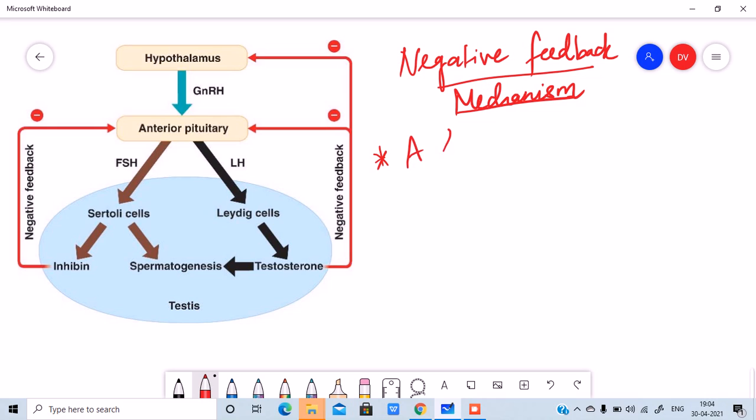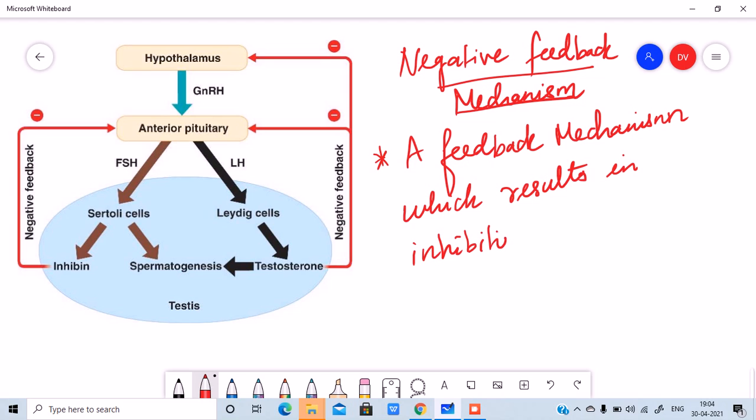What is it? I'm just giving you a definition so that you can easily understand it. A feedback mechanism which results in inhibition or to slow down a process is known as the negative feedback mechanism.